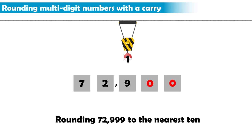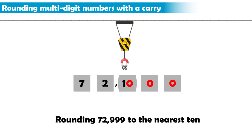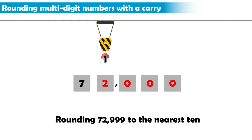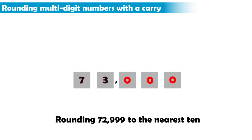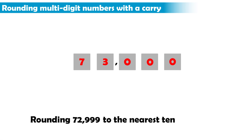But the digit to the left of the 9 in 99 is also a 9, so it becomes a 10. It takes the 0, and the 1 is carried to the digit to its left, which is a 2. So adding 1 to it makes it 3, and we are done. The number becomes 73,000.